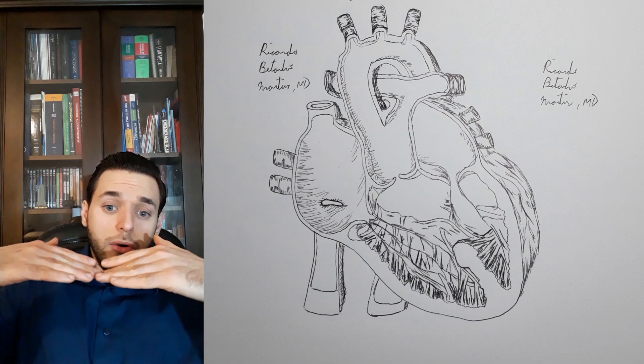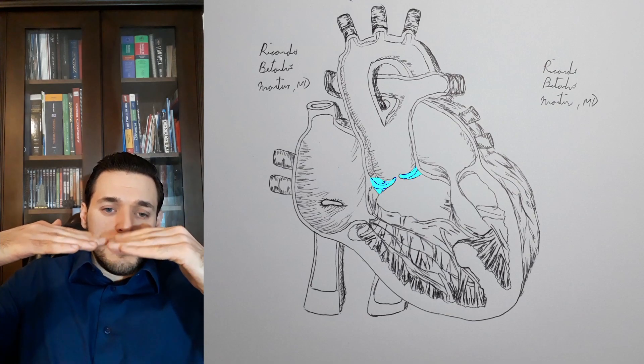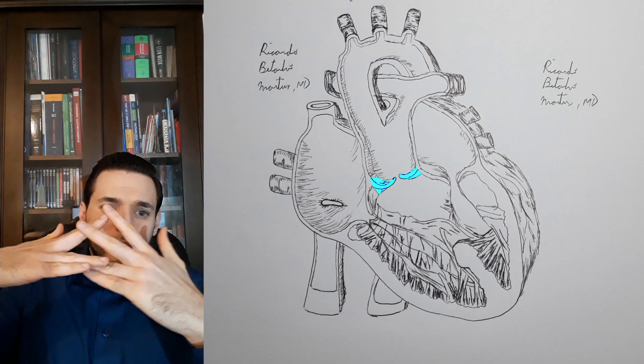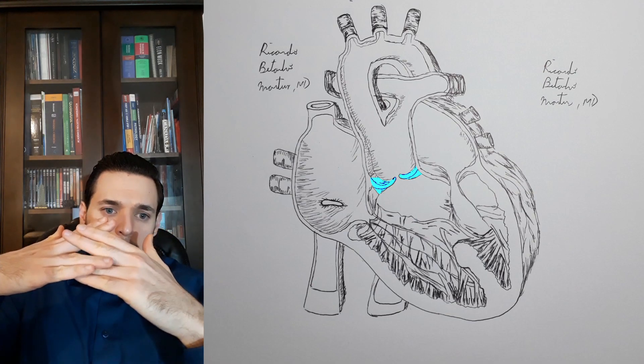There is usually a single semilunar valve, called the truncal valve, that often includes dysplastic or supernumerary leaflets.